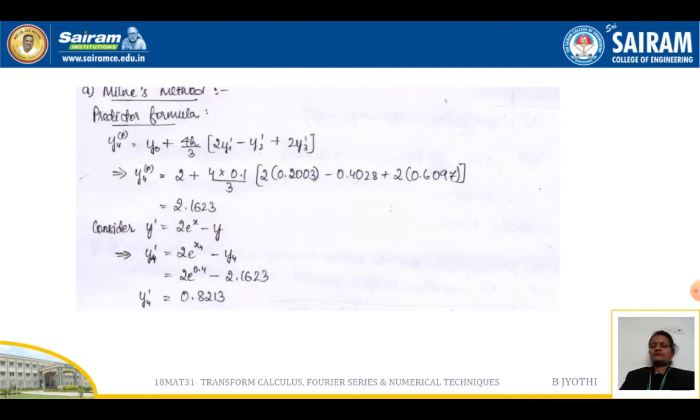The predictor formula says y₄(p) = y₀ + 4h/3[2y₁' - y₂' + 2y₃'], which gives us 2.1623. And y' = 2e^(x₄) - y₄, where y₄ is this value.